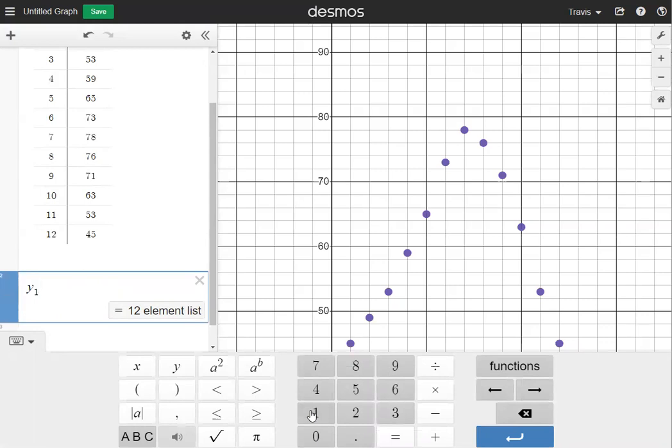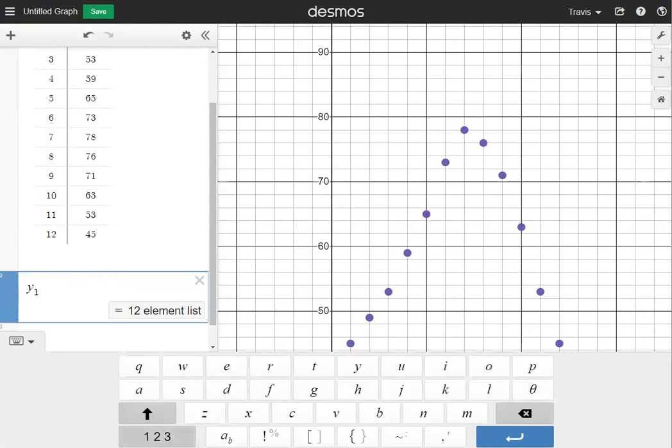Now I need my regression symbol, which is a squiggly line called the tilde. To get that, I'm going to click on ABC at the bottom, and then on the bottom row, you'll see the squiggly line right here next to the comma. I'm going to click that once.